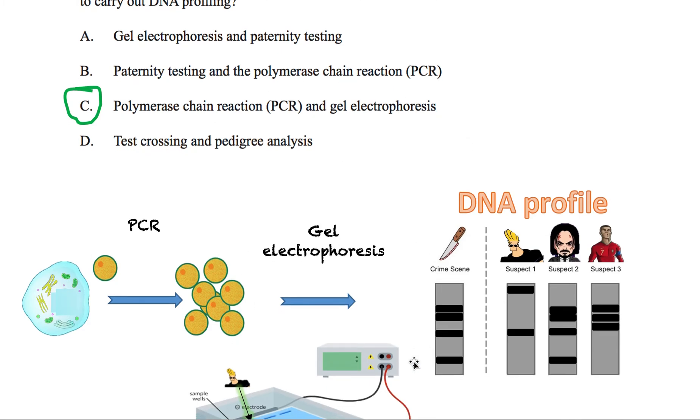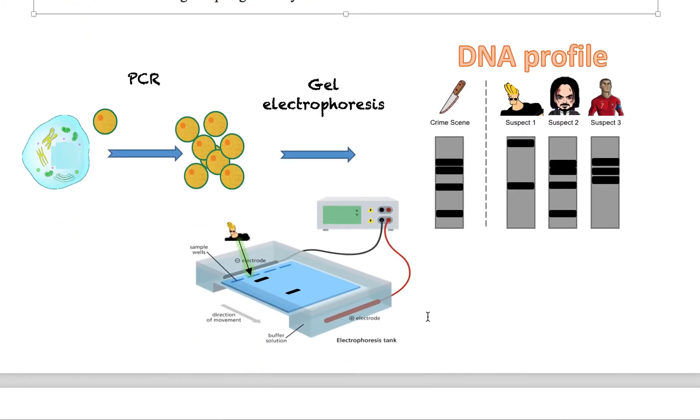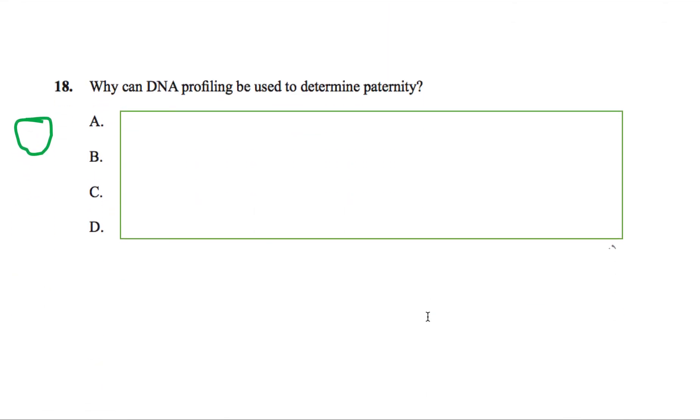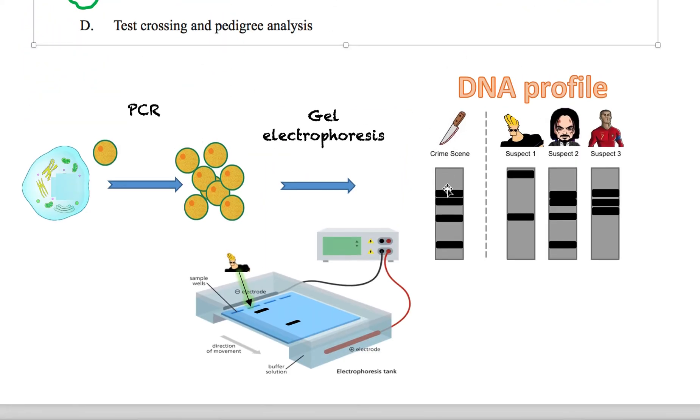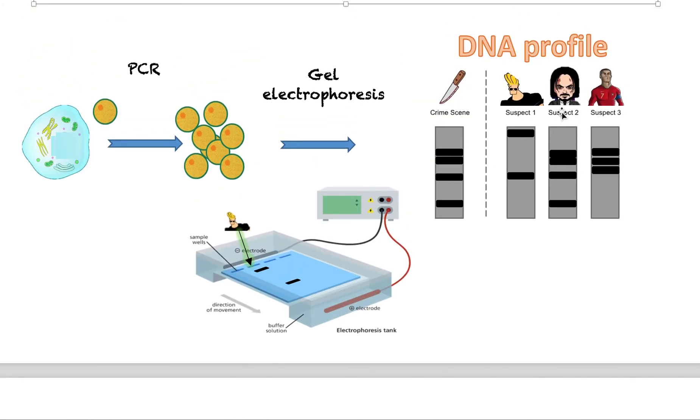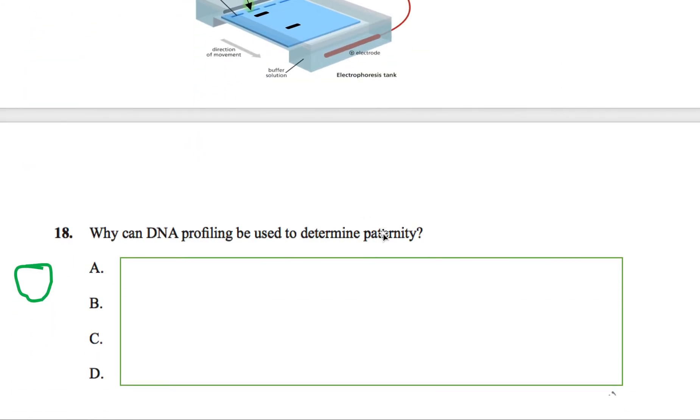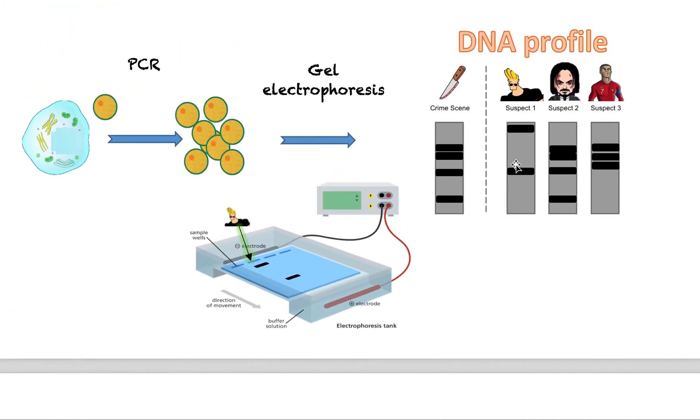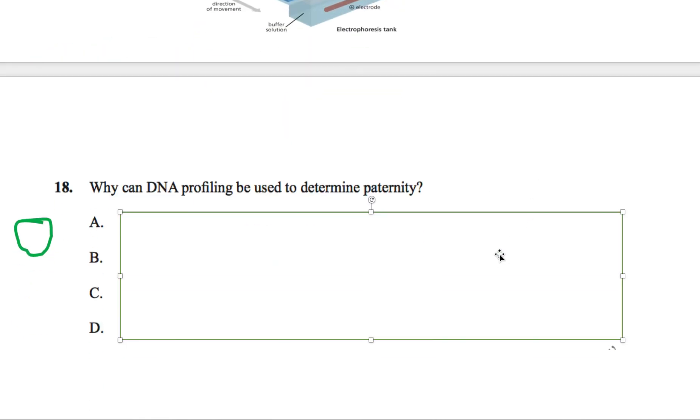So let's go to one more question. I hope this is making sense so far. I can't go into that much detail so watch the videos if you want clarification. So why can DNA profiling be used to determine paternity? So again this all makes sense now. DNA profiling is this, this is a DNA profile. Why can this be used to prove or determine paternity? Remember paternity is who your parent is or to prove that you are the parent of a certain kid.